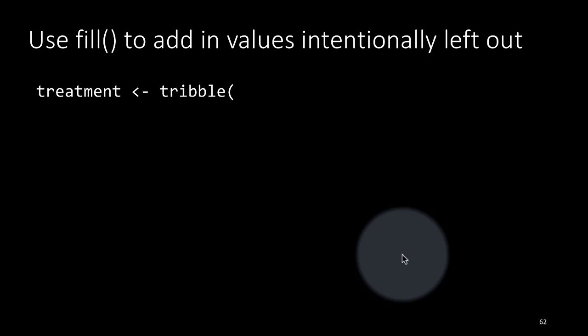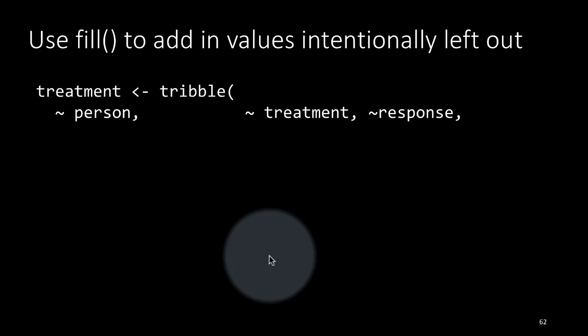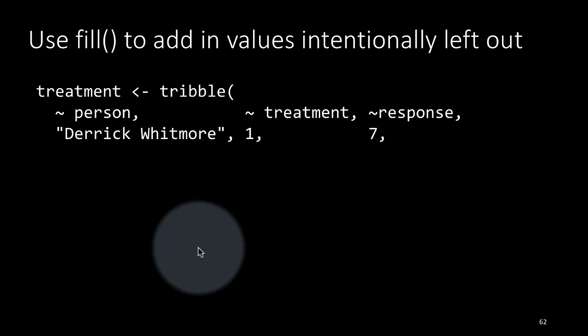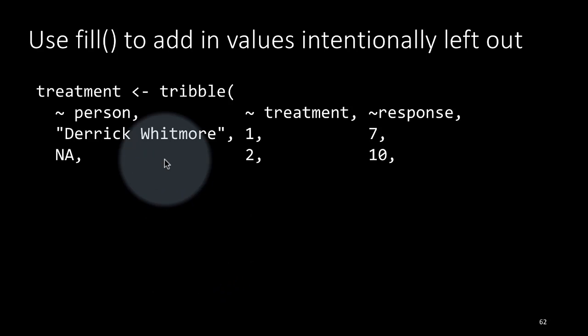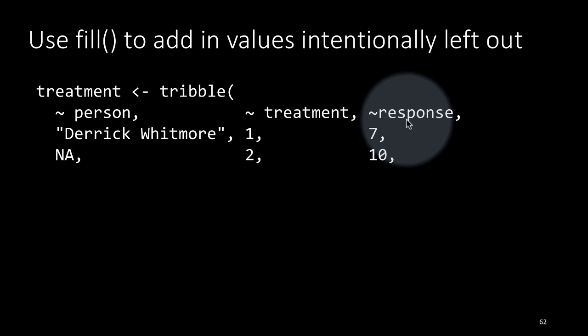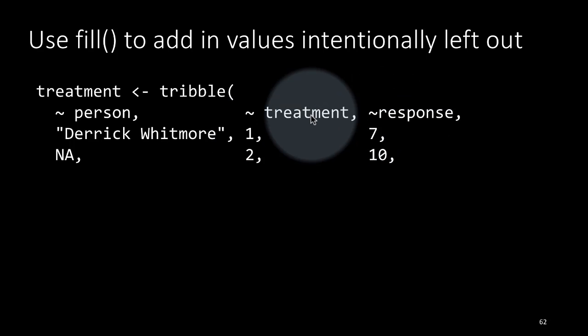Another important function that you might use is the function called fill to add in values intentionally left out. Here we are showing you an example of a data set which has three columns: person, treatment, response. Treatment might be some kind of pill that was given to the person and response is how the person's body reacted to that pill.